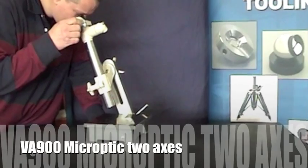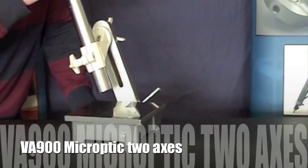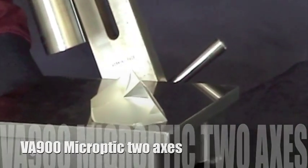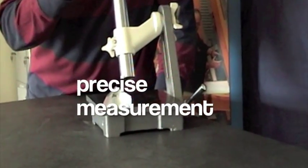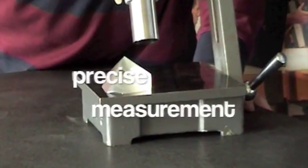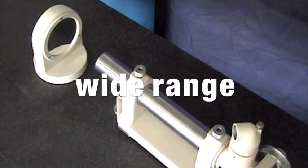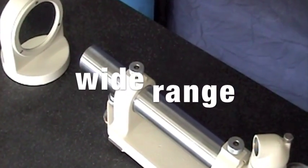Then there is the VA900 micro optic two-axis autocollimator. A lightweight, high accuracy instrument ideal for precise measurement of angles of components such as prisms. It has a wide range using a combination of graticule and micrometer drum.